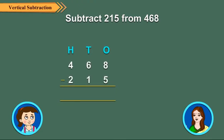Write the numbers in columns. Write the greater number above the smaller number. Subtract 1's from 1's. 8 1's minus 5 1's is equal to 3 1's. Write 3 under the 1's column.